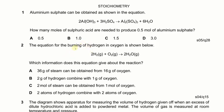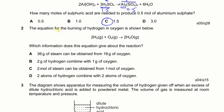Let's solve some more questions on moles. The first question says aluminum sulfate can be obtained as shown in the equation. How many moles of sulfuric acid are needed to produce 0.5 moles of aluminum sulfate? The mole ratio between aluminum sulfate and sulfuric acid is 1:3, so if it is 0.5 moles, that would be three times that, giving 1.5 moles. The answer is C.